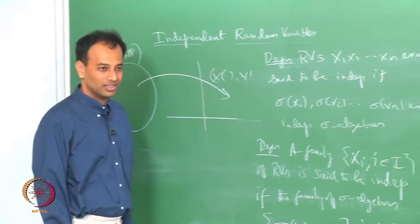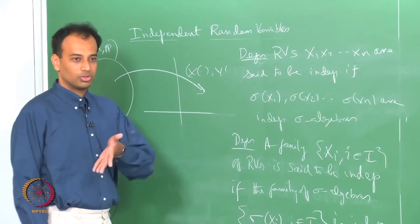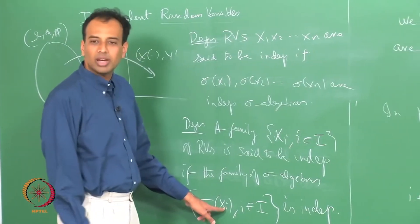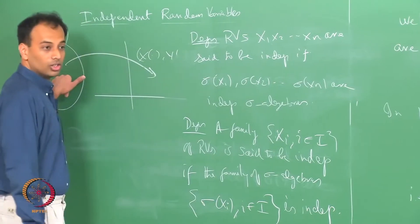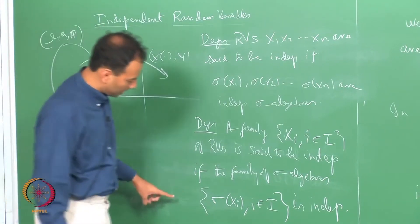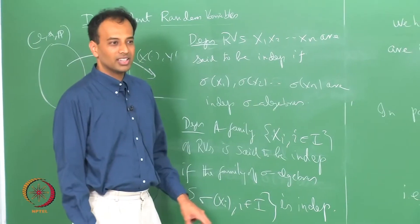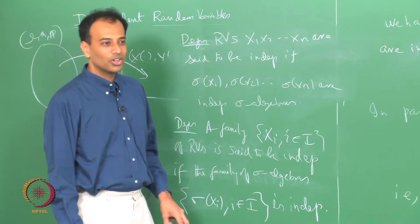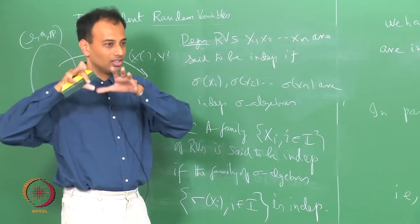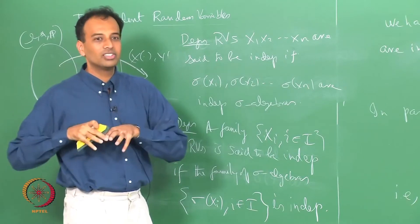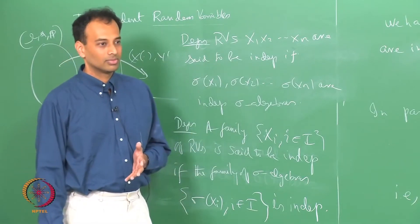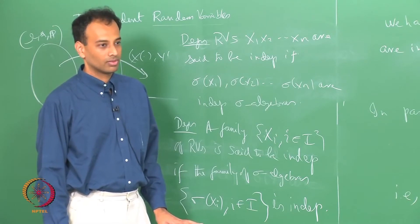So in effect, what this means intuitively: recall that σ(xi) is the collection of all events whose occurrence or non-occurrence is completely decided by the realization of xi. So by saying these sigma algebras are independent, I am saying that the set of all events you can decide by looking at xi and the set of all events you can decide by looking at xj — those events are independent.